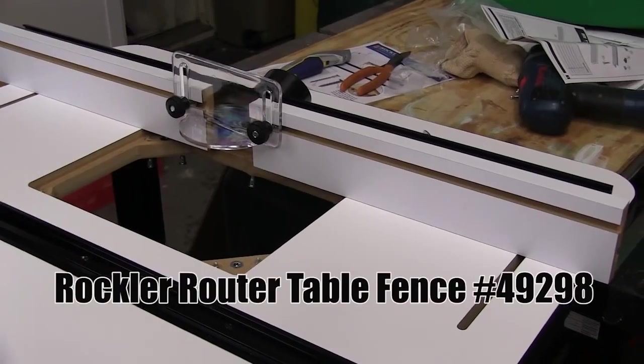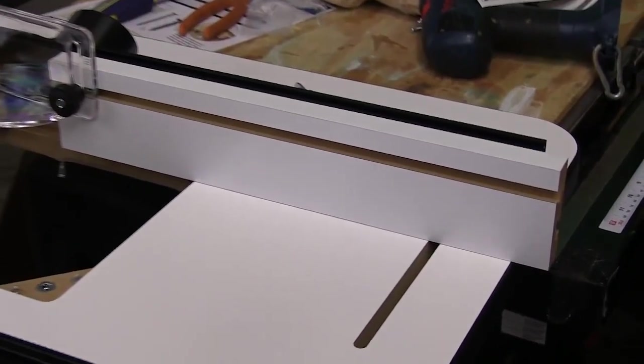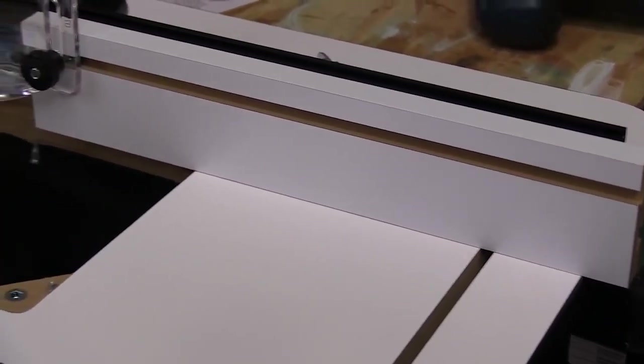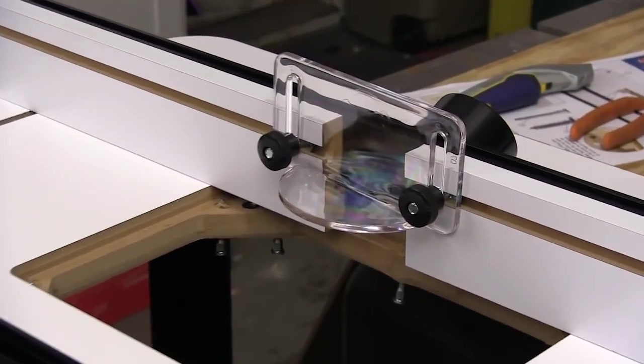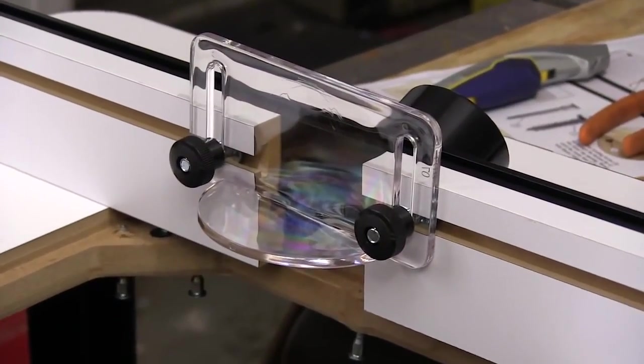The fence has high pressure laminate faces that are easily adjusted in or out and come with a machine slot that makes attaching jigs or fixtures much easier. And to keep you safer this table comes with this adjustable bit guard.